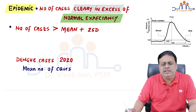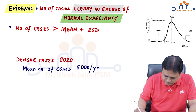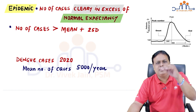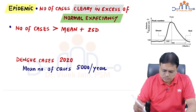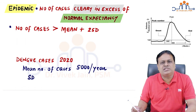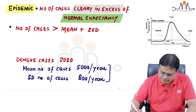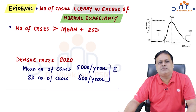Suppose the mean number of dengue cases in Delhi is 5000 cases per year, calculated from the last three to five years of data. This does not mean every year it will be exactly 5000 — it can decrease to 4000 or increase to 6000 or even higher. This variation is known as standard deviation. Suppose the standard deviation in dengue cases every year in Delhi is around 800 cases per year. On average, 5000 cases are expected, but it can increase or decrease by up to 800.